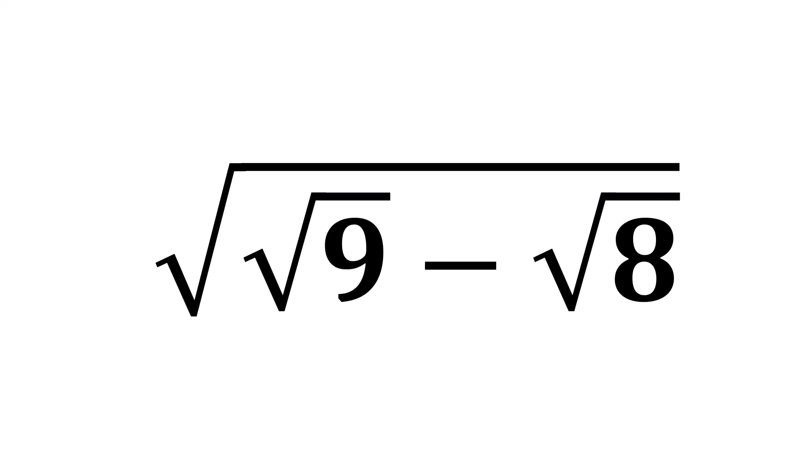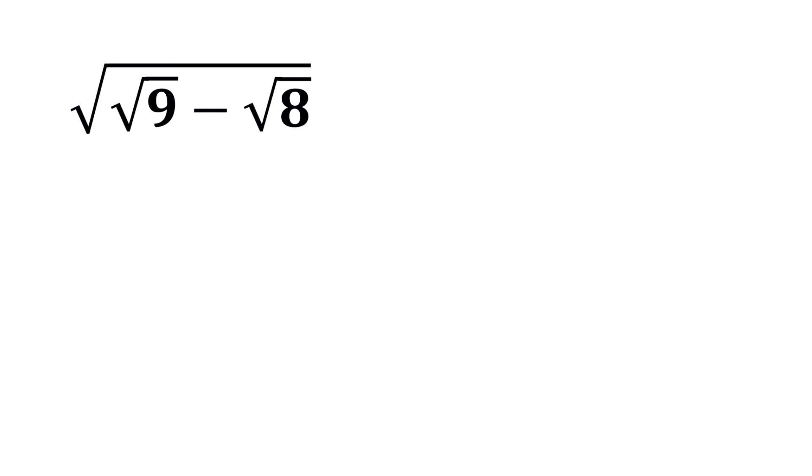The square root of the square root of 9 minus the square root of 8. The square root of 9 is 3, and 8 can be written as 4 times 2.